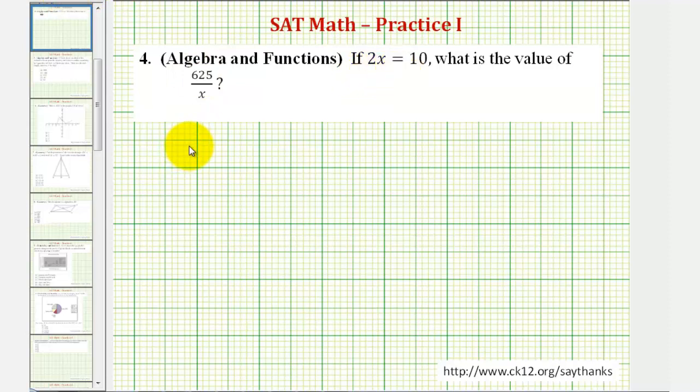So if we're told that 2x equals 10, we can solve for x by dividing both sides by two. The left side simplifies nicely to one x, or just x, and 10 divided by two is equal to five.